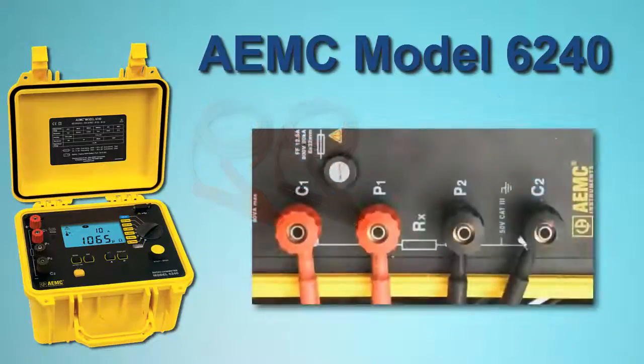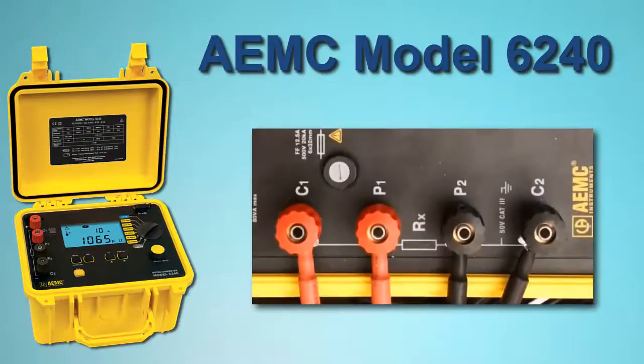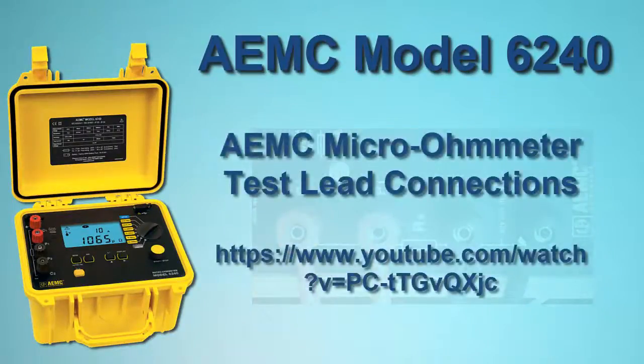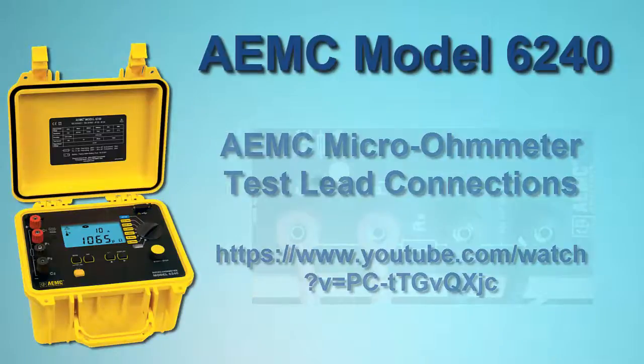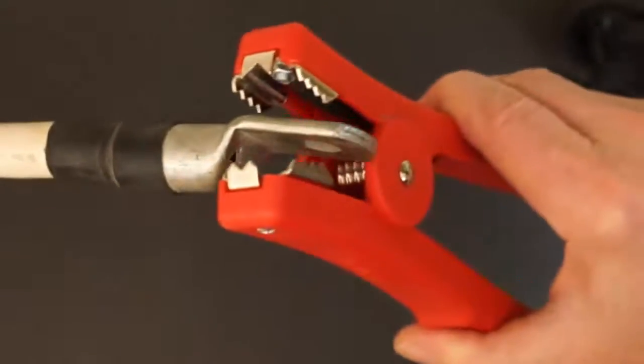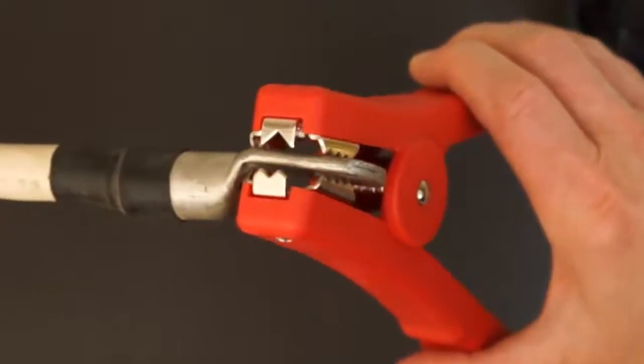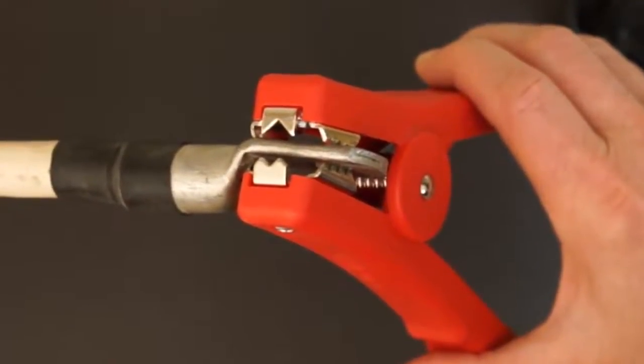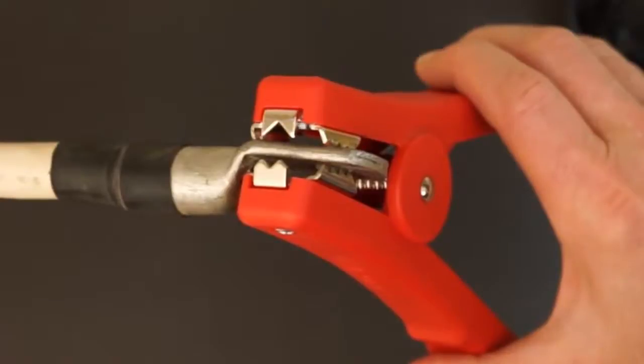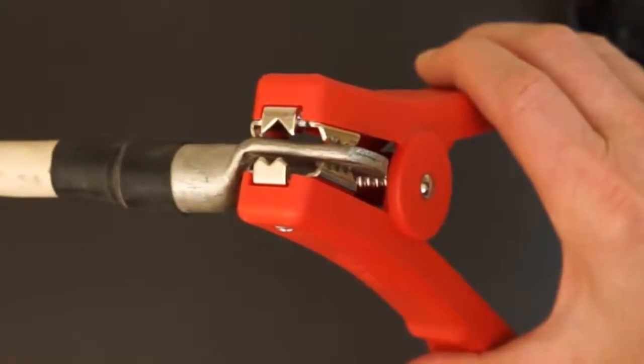Be sure all leads are correctly attached to the instrument's terminals, as explained in a separate AEMC video. And when using HIPPO or alligator probes, ensure that both jaws are in contact with the resistor under test. One jaw functions as a source lead, and the other as a sense lead. Therefore, both must be in firm contact with the resistor's surface to provide an accurate measurement.